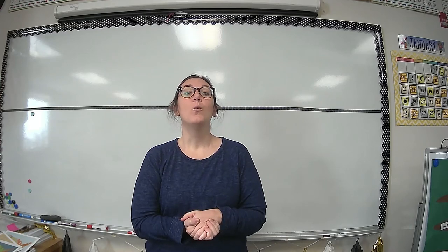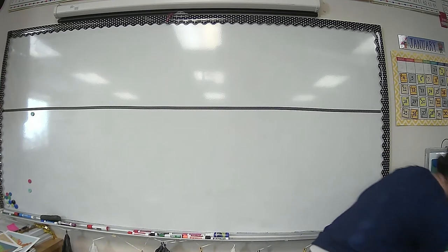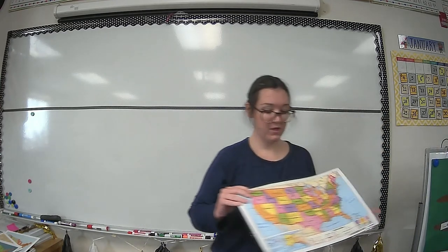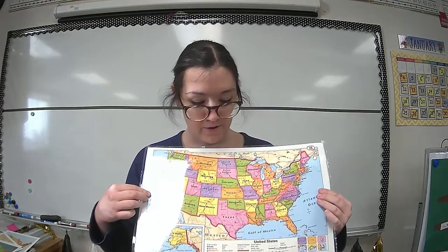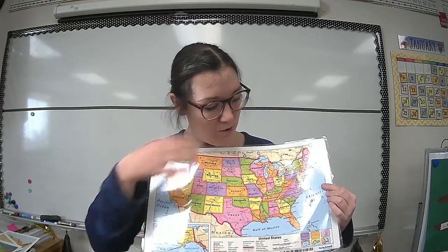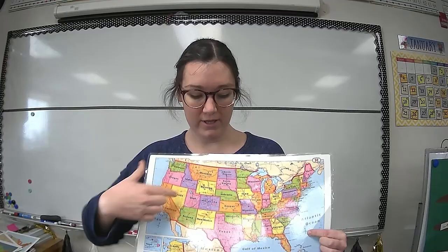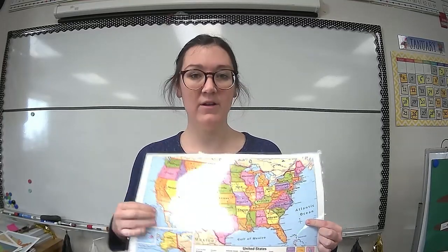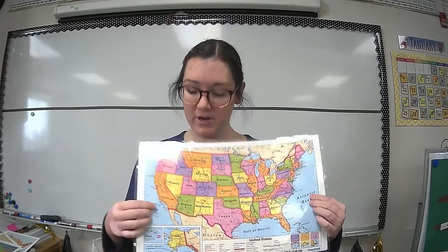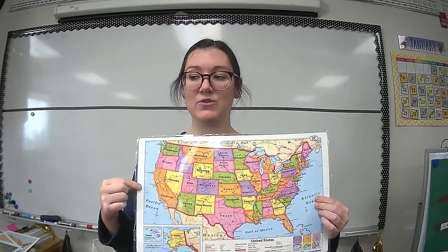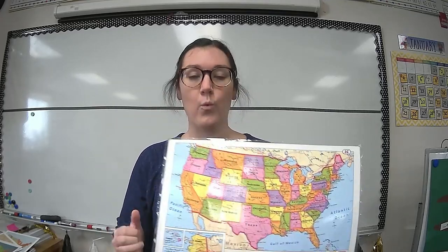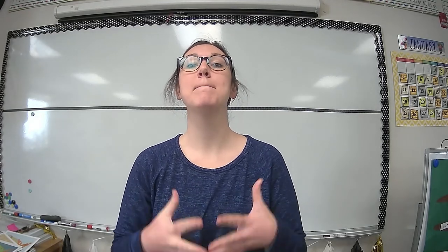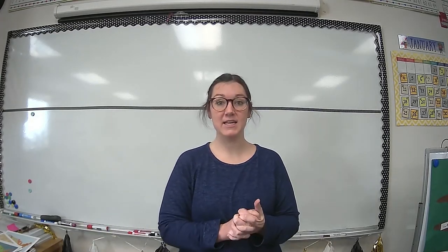Let me pull up a map. In this map of the United States, our compass rose is very small. It's showing that north is up, south is down, east is over here, and west is in this direction. So 'westward' means that you are moving west, and 'expansion' means that it is getting bigger — if something is expanding, it's getting larger.